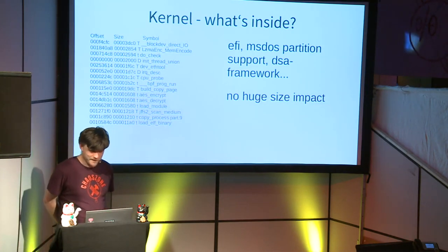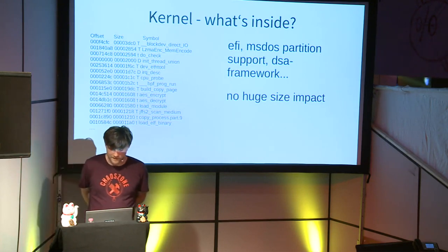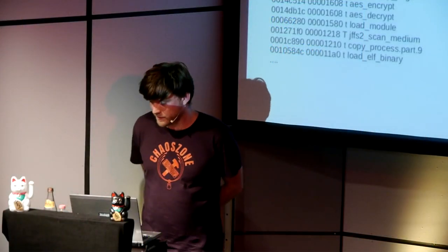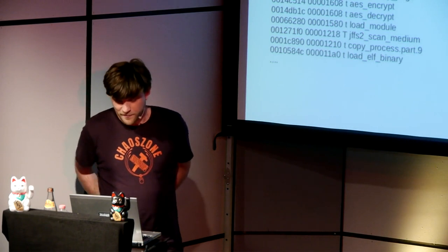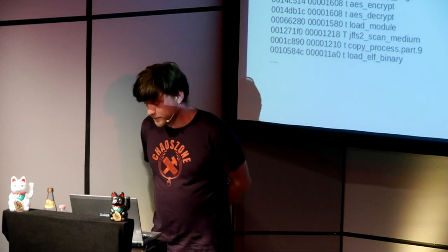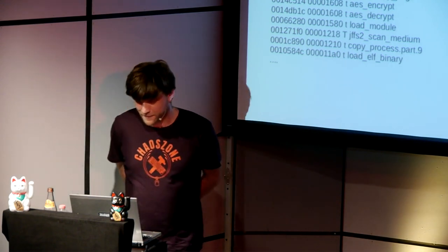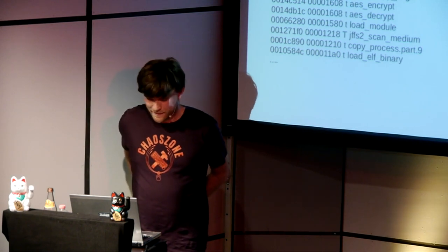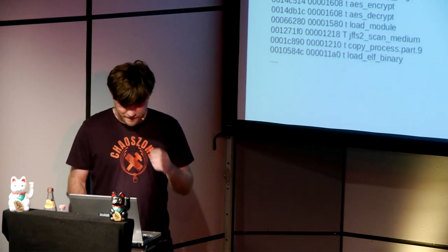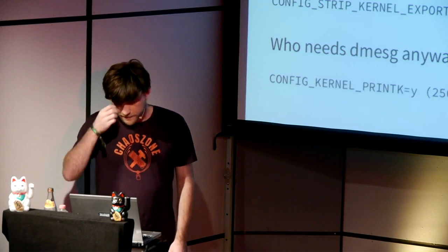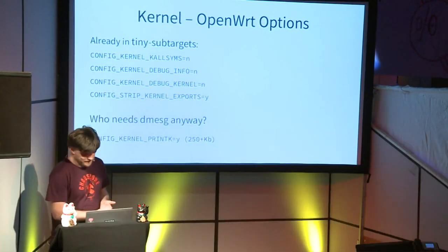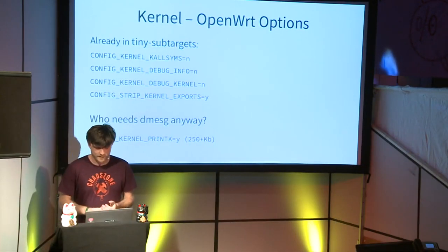You have some unexpected things in there, like EFI support, MS-DOS partition support, and support for a new switch framework that is only used on a single device among all devices in the tiny target. However, switching these options off in the kernel config only saves 10 or 20 kilobytes. It's still worth checking for misconfiguration, and these are the basic OpenWRT options important for reducing kernel size.